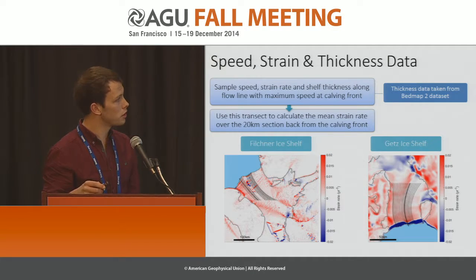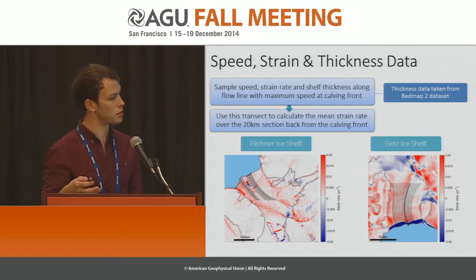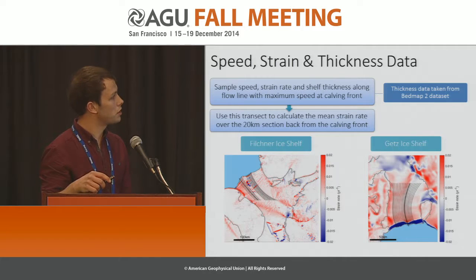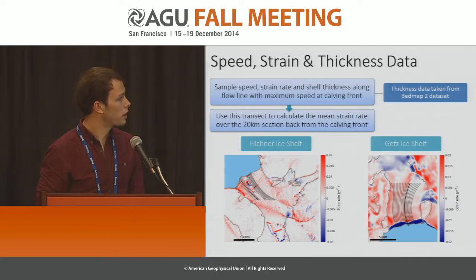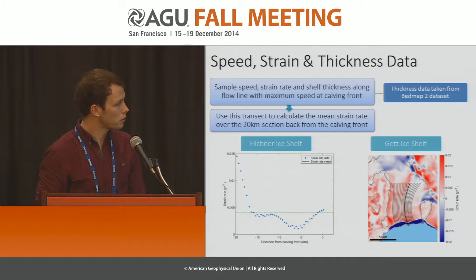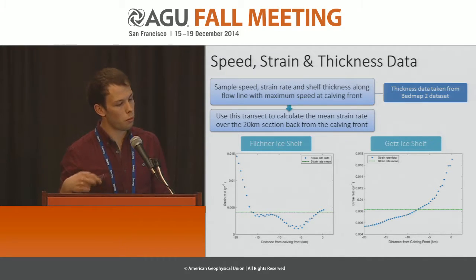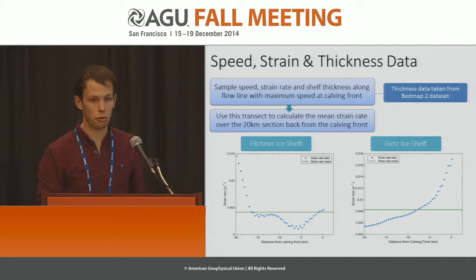We then construct a series of streamlines which trace the path taken by ice as it flows towards the calving front. Along these we can sample speed, strain rate, and shelf thickness. The thickness data is taken from the BEDMAP2 dataset. We use the streamline of maximum velocity, as this theoretically should provide values along the centre line of the ice shelf. We can see the strain rate and streamlines for Filchner and Getz ice shelves. To calculate a mean strain rate, we take the strain rate values along this streamline of maximum velocity and calculate a mean over the final 20 kilometres, where the calving front is at the right-hand end of the plot and ice is flowing from left to right. We then collect the speed and thickness at the calving front. This process is repeated for 22 Antarctic ice shelves.